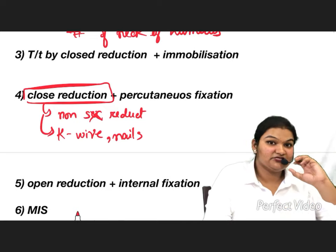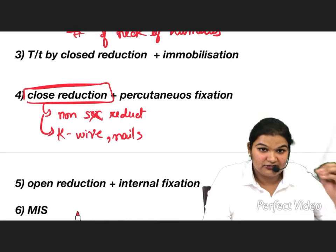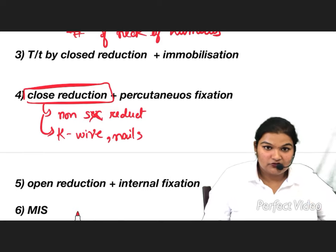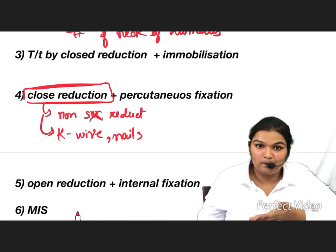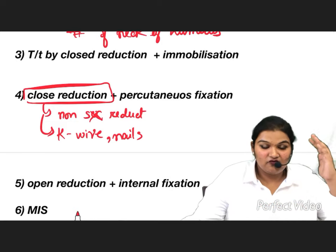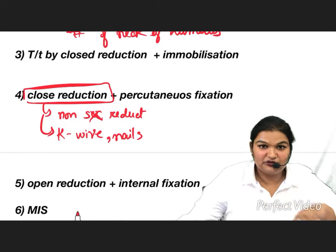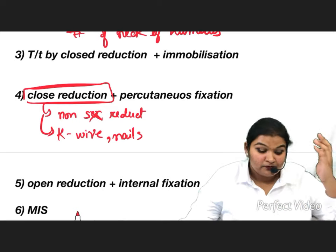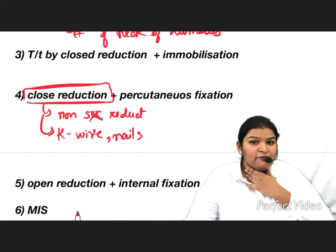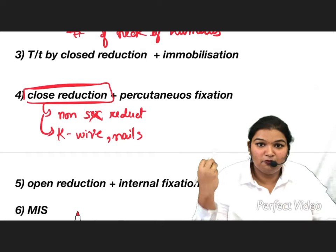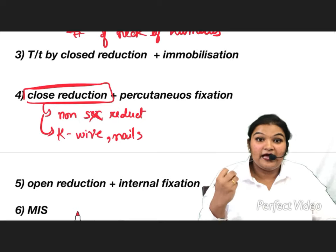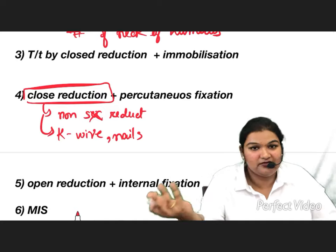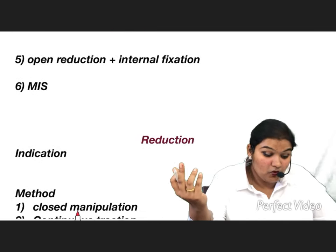Closed reduction and percutaneous fixation is preferred for intra-articular fractures because mobilization of the joint is important. Applying a large cast would immobilize the patient for months, leading to complications such as joint stiffening, muscle wasting, bed sores, loss of physical activity, and embolism. The goal is to mobilize the patient as soon as possible.